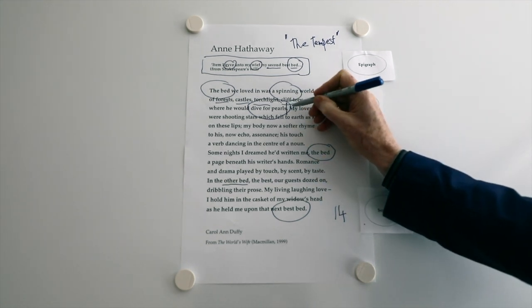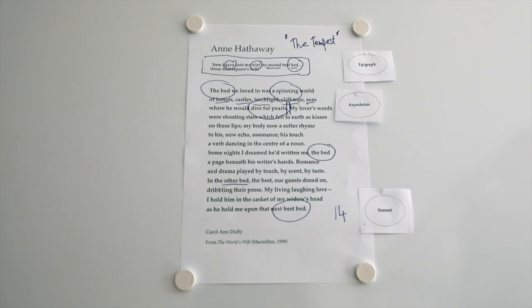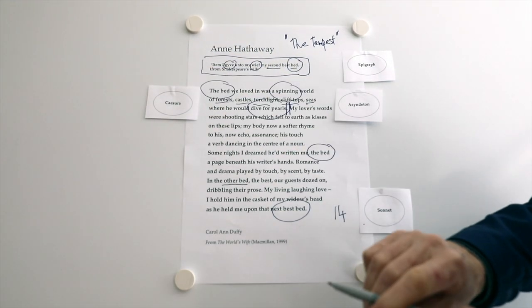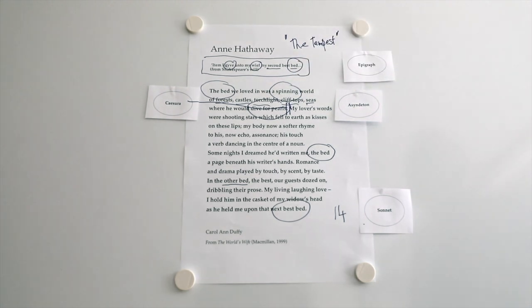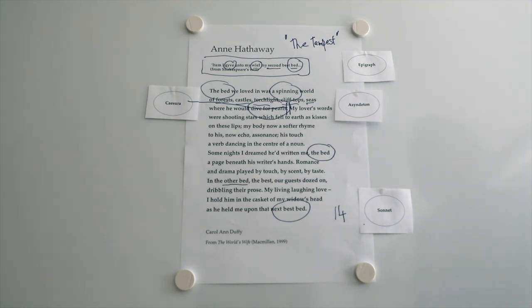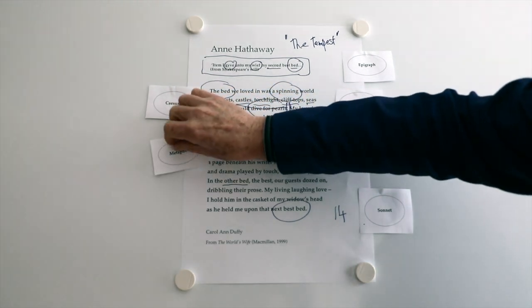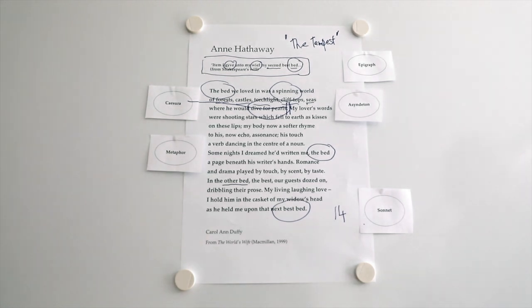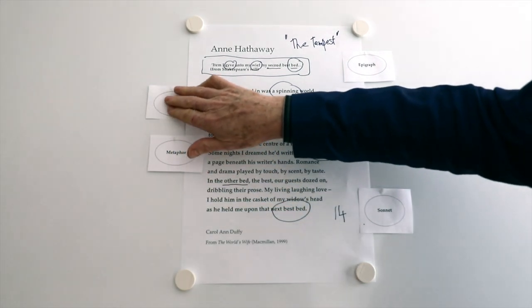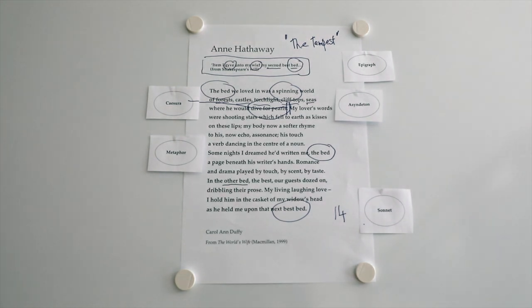Then, we've got a break in the line. Do you see that? After the full stop. And we call that, and you'll see a number of these in the poem, a caesura. So, that's the caesura here. So, after that word pearls, we pause. And then, into this excitement of my lover's words were shooting stars, which fell to earth as kisses. And there, we get a metaphor of shooting stars. That's what they've become. That's what they are to her. Coming down from heaven.